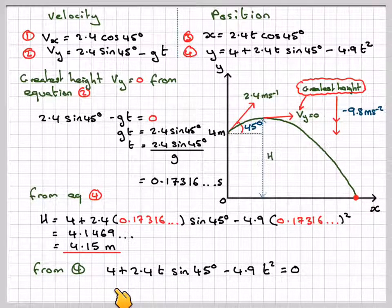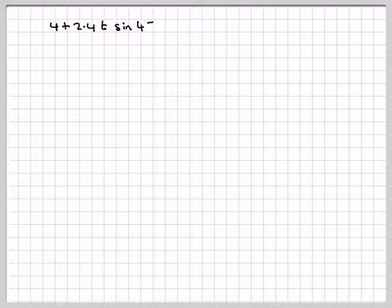Now to find the time when we get to here. So from equation 4, the time when we get to here will be when this y, this equation here, equals 0. So we put 4 plus 2.4t sin 45 degrees minus 4.9t squared equals 0.